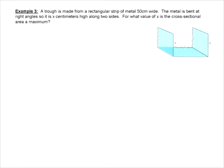Oh, this is a common one. So we have a trough made of a rectangular strip of metal. The metal is bent at right angles, so it's x centimeters high along two sides. For what value is the cross-sectional area a maximum?